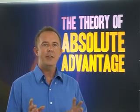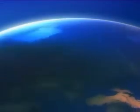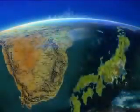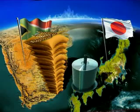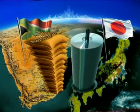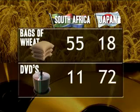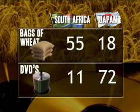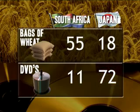Let's construct a simplified theoretical example to illustrate the point. Imagine that we live in a world where there are only two countries: South Africa and Japan. Both countries have differing capabilities to produce two products — wheat and DVDs. Over a certain time period, South Africa can either produce 55 bags of wheat or 11 DVDs using all their resources. Japan, on the other hand, can either produce 18 bags of wheat or 72 DVDs using all their available inputs.